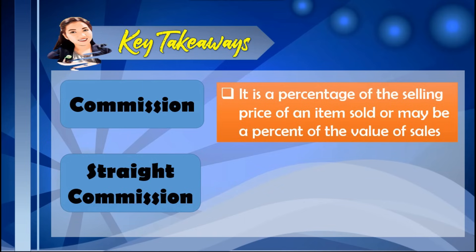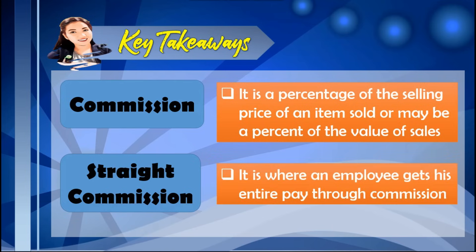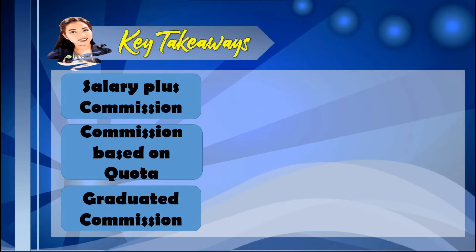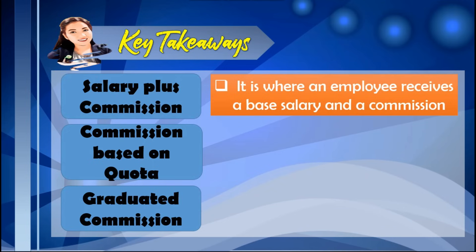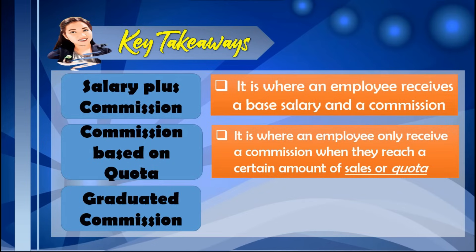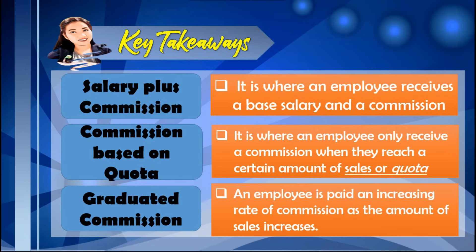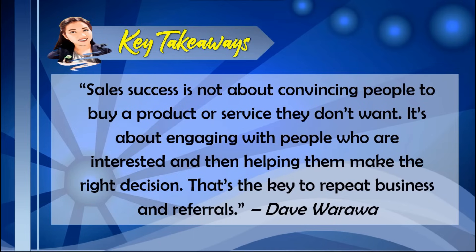Here are the important things to remember. Commission is a percentage of the selling price of an item sold or a percent of the value of sales. There are four types: straight commission, where an employee gets his entire pay through commission; salary plus commission, where an employee receives a base salary and a commission; commission based on quota, where commission is only received when a certain sales level is reached; and graduated commission, where the commission rate increases as sales increase. As Dave Warawa said, sales success is not about convincing people to buy what they don't want — it is about engaging with interested people and helping them make the right decision. That is the key to repeat business and referrals.